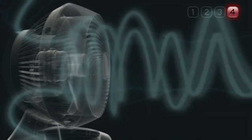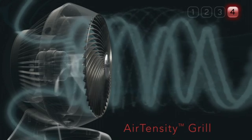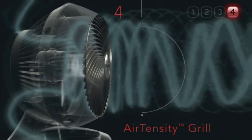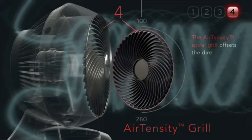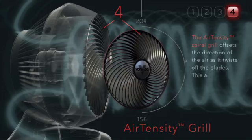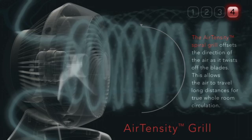Many believe the Vornado's spiral grille is simply a visual design element, but it actually plays an important role in vortex action. The AirTensity grille offsets the direction of the air as it twists off the blades. This allows the air to travel long distances for true whole room circulation.